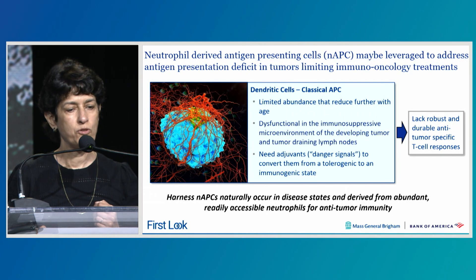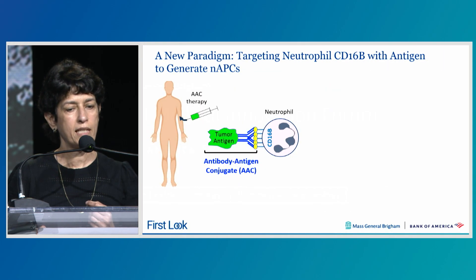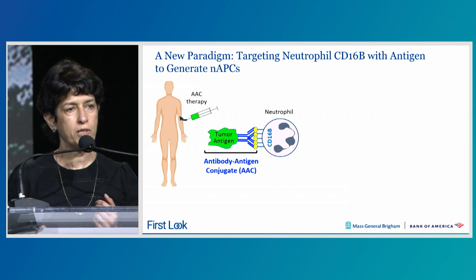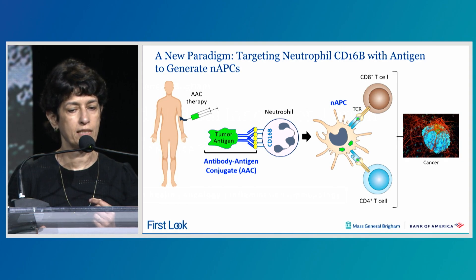Our concept is to harness neutrophil-derived antigen-presenting cells, referred to as NAPCs, that naturally occur in disease states including cancer, and are derived from abundant, readily accessible neutrophils—we make about 100 billion per day. We target CD16B, an Fc-gamma receptor expressed almost exclusively on human neutrophils, with an antibody conjugated to a tumor-associated or tumor neoantigen. This antigen-antibody conjugate, or AAC, is internalized via CD16B, delivering the tumor antigen into the cell and converting that neutrophil into an antigen-presenting cell that robustly activates both cytotoxic CD8 T-cells and helper CD4 T-cells critical for cancer immunity.